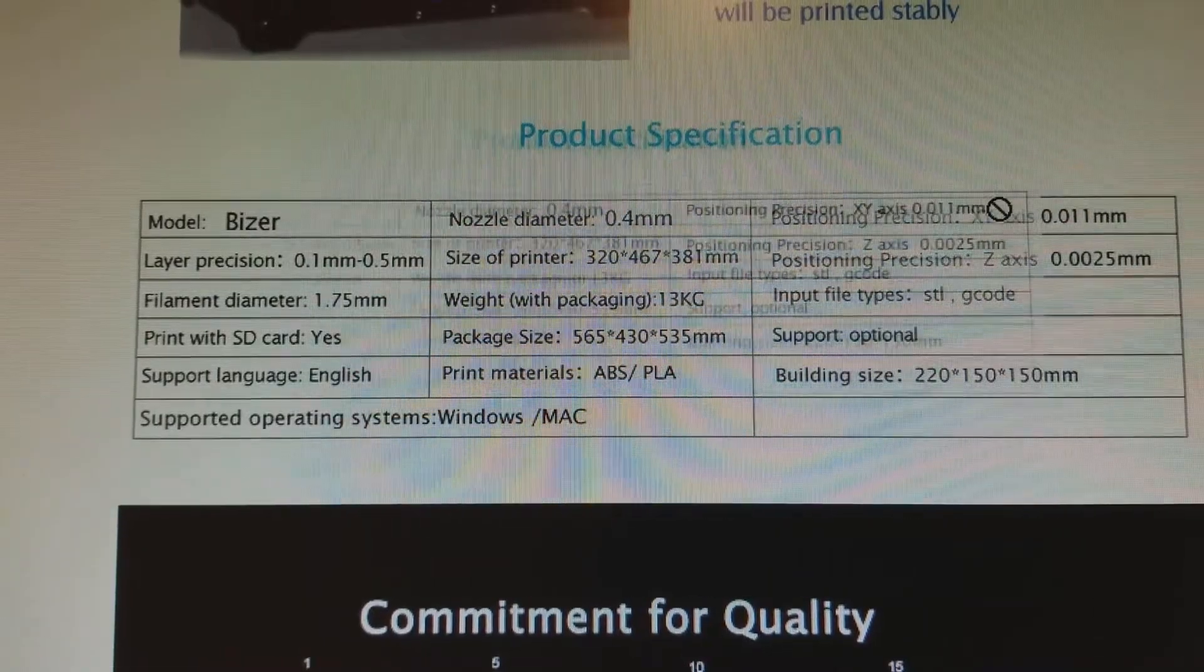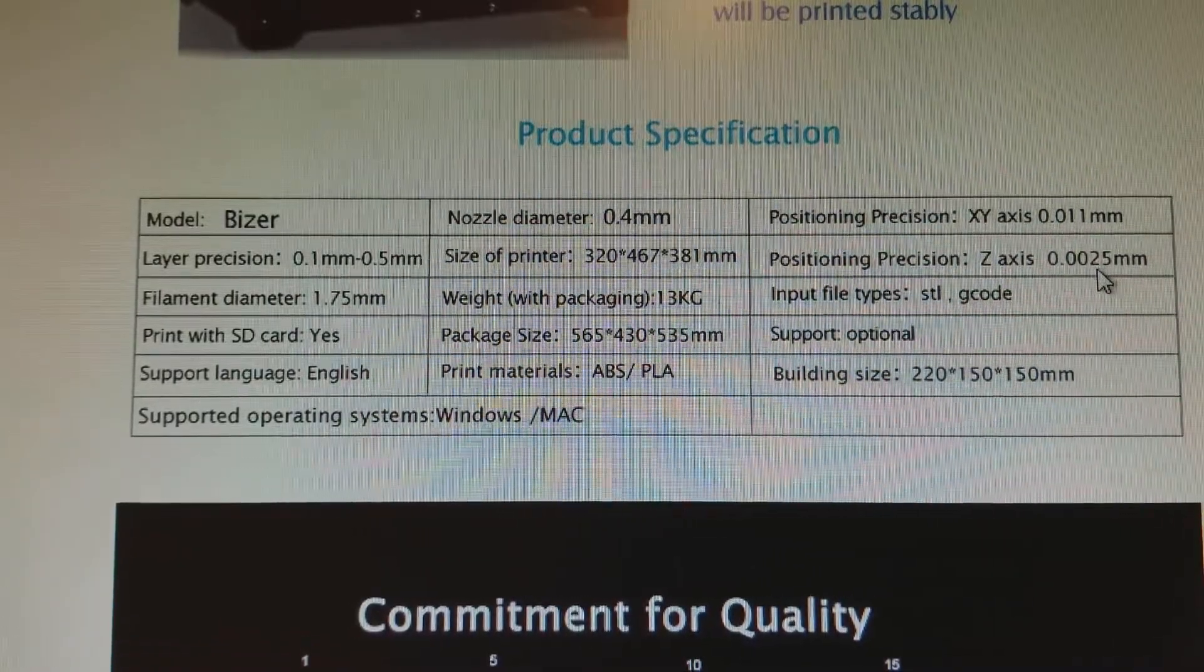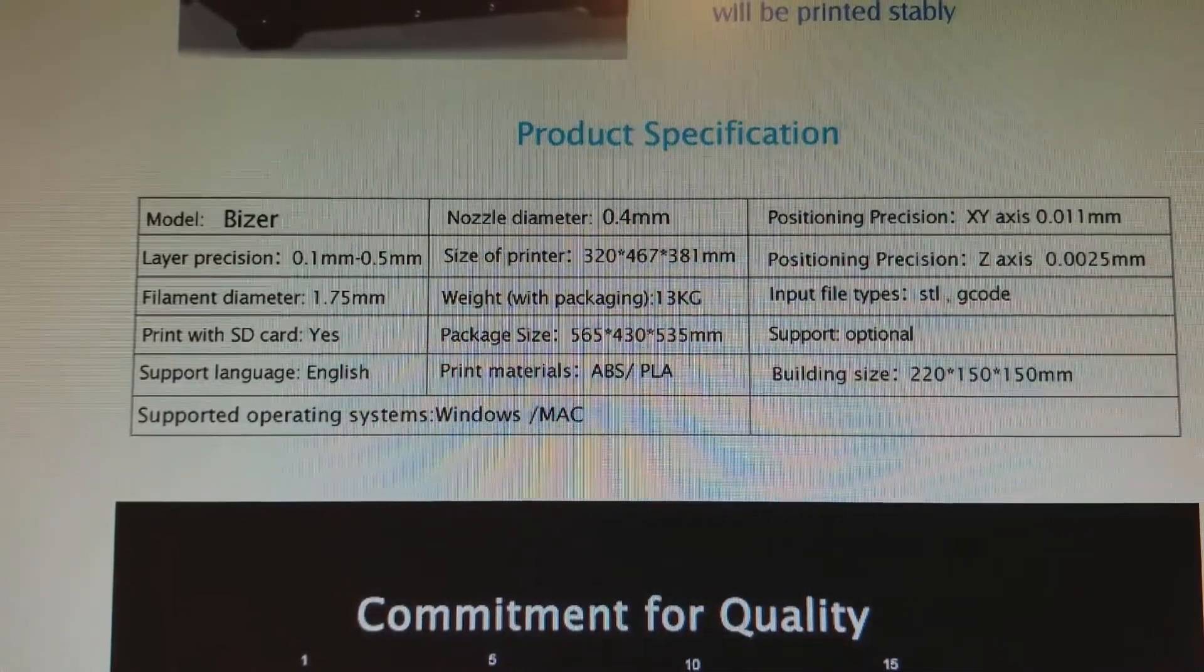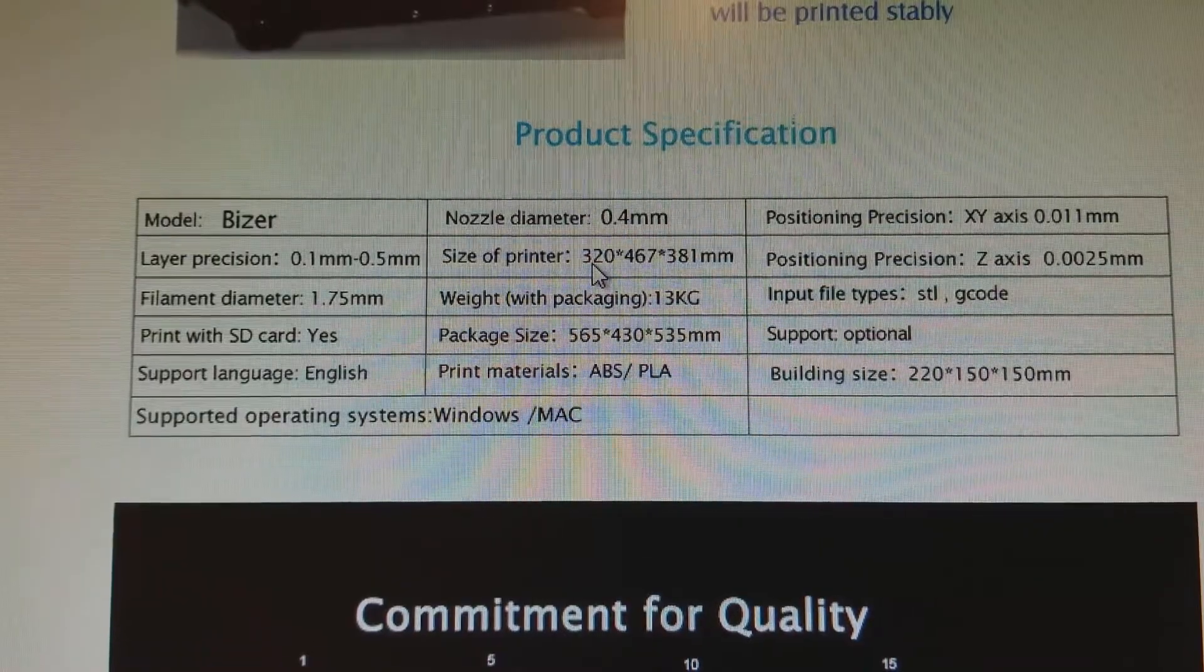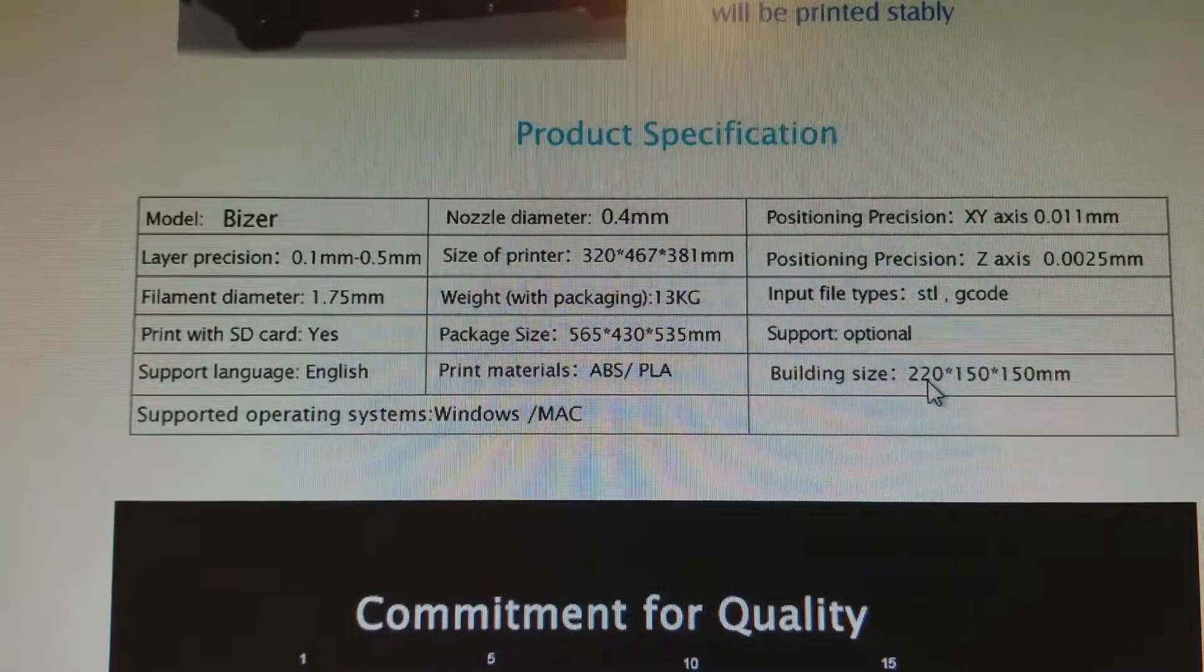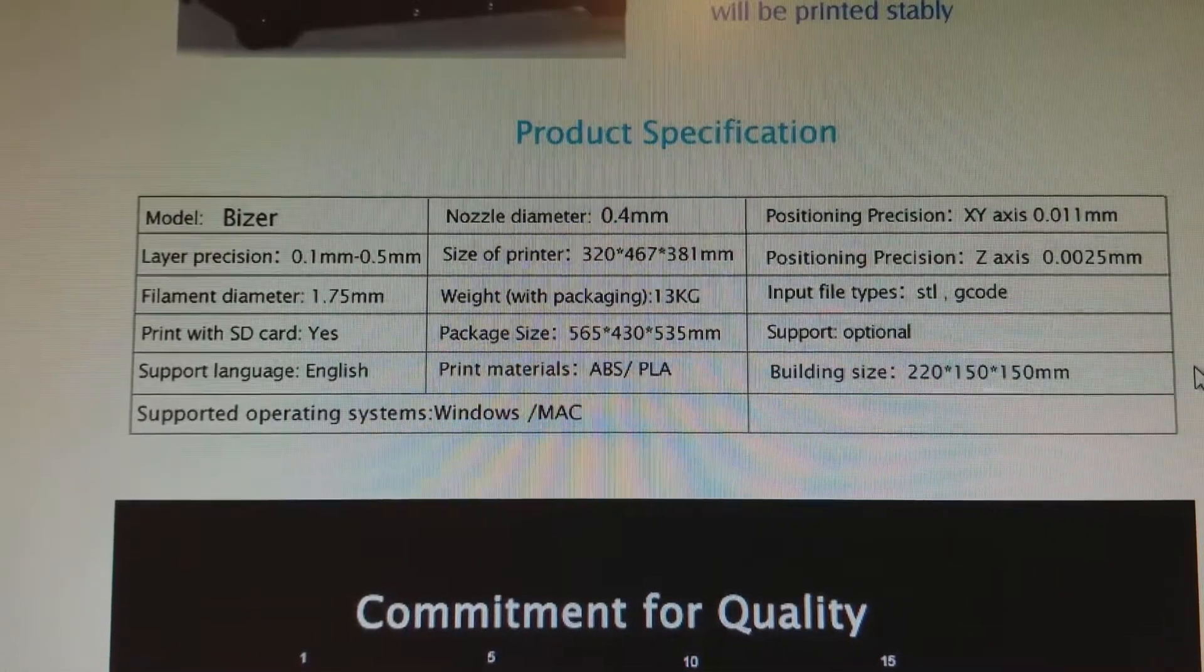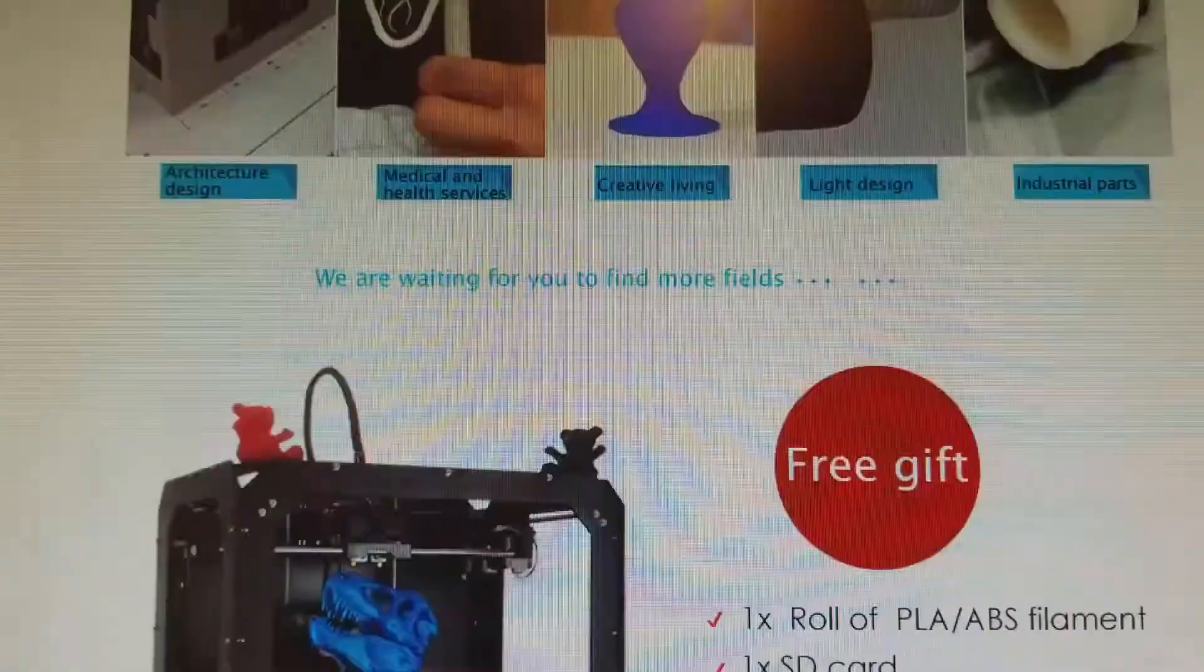It has some pretty decent parameters. I've actually been looking at this for about six months. It seems to be fairly reasonable in price and for the parameters that it has. You can see here X and Y 0.011 millimeters, Z-axis is 0.0025 millimeters, so that's actually pretty precise. The size of the printer is 320 by 467 by 381, and the build size is 220 by 150 by 150, which is just slightly bigger than the advertised build side of my Eckertech printer.